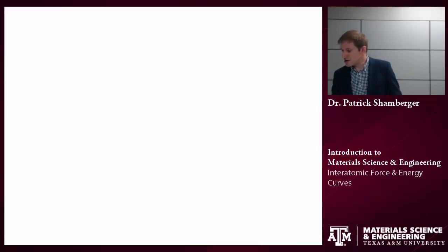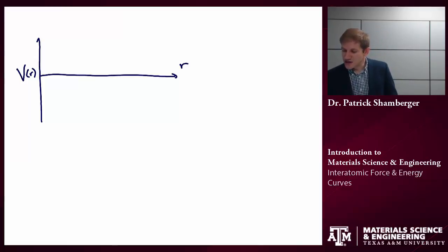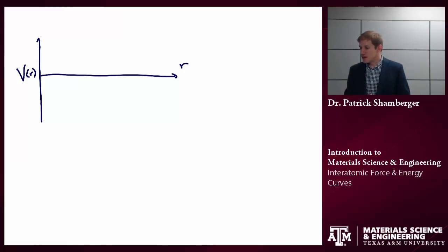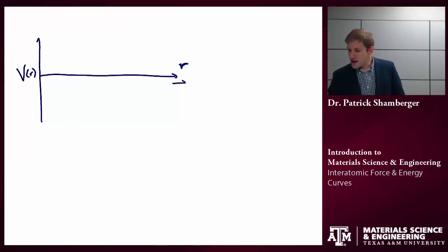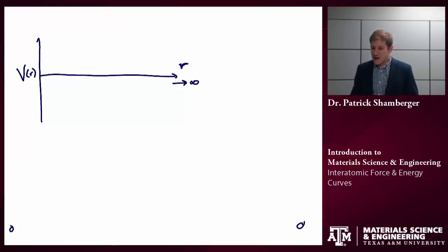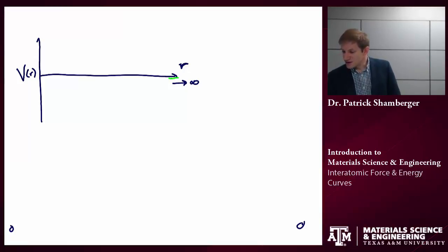We're going to start off by talking about an interatomic energy curve. We're looking at the potential energy, often denoted by V, as a function of the interatomic distance. We're going to use R because sometimes we assume that atoms or ions are radially symmetric — that might not always be the case — but we'll use R to denote the distance between the two particles regardless. Starting way out at an infinite distance, if I have two atoms that are very, very far apart, essentially they're not going to really see each other, and they're going to interact only very weakly. So we can assume that the potential energy at that very large distance is essentially zero.